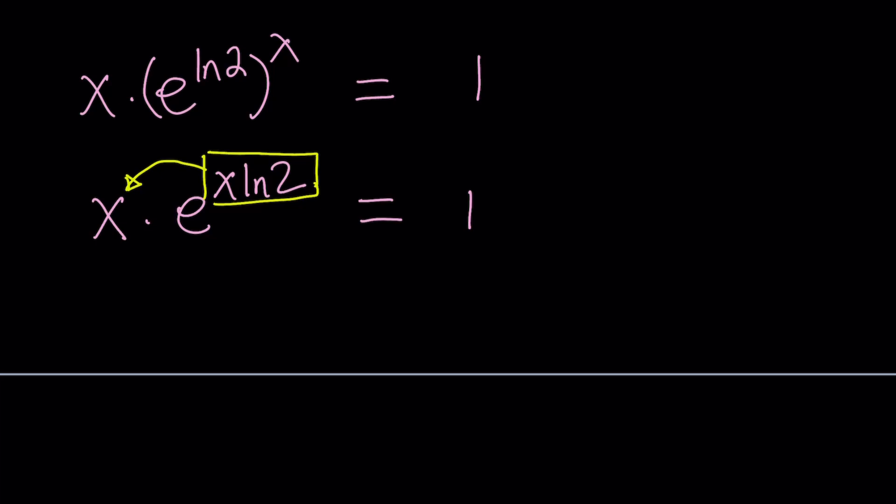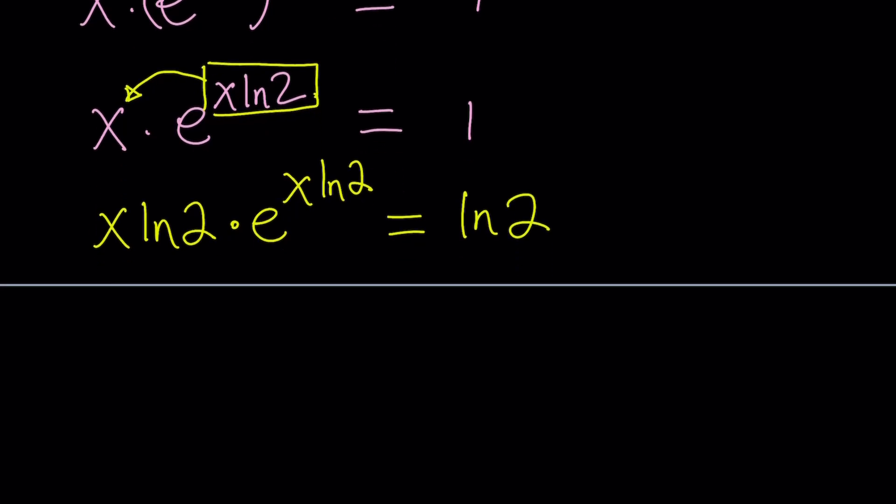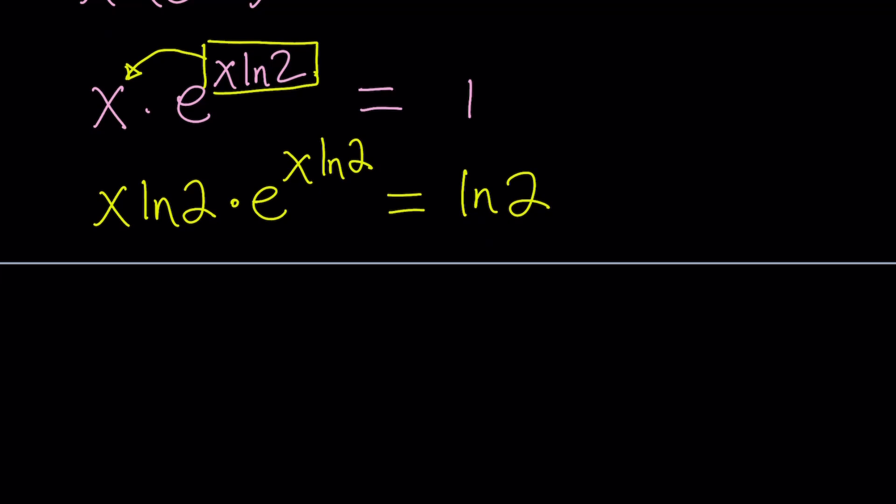Let's multiply both sides by ln 2. So we get x ln 2 times e to the power x ln 2, which is 1 times ln 2, which is ln 2. ln is the natural log, by the way. Now we got the same thing. That's good.